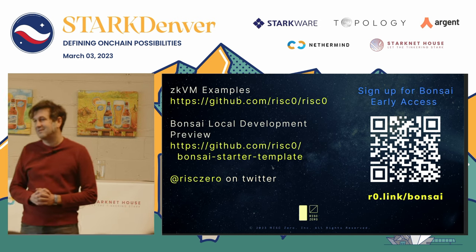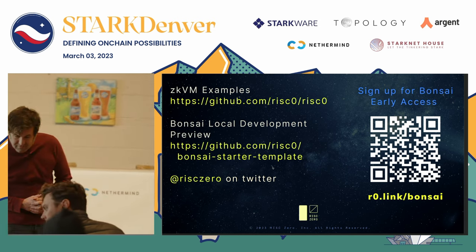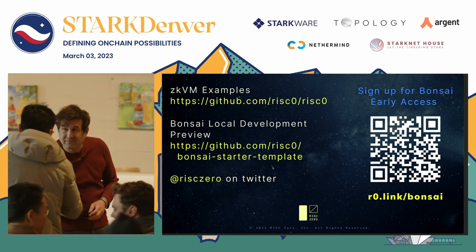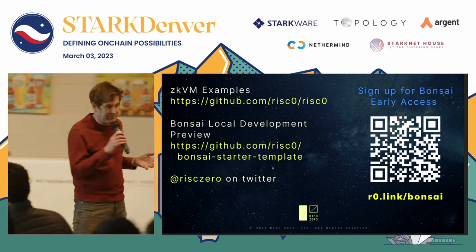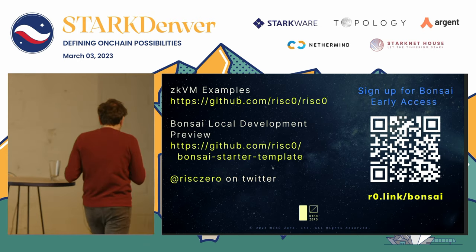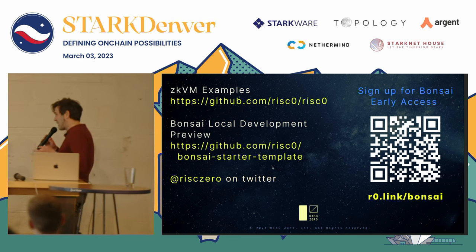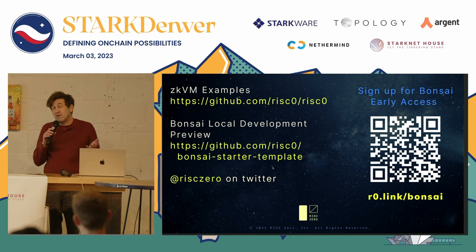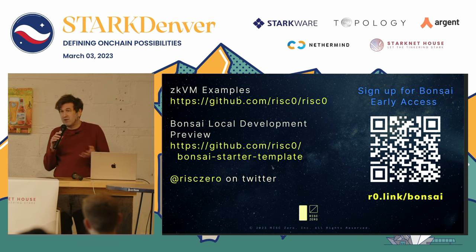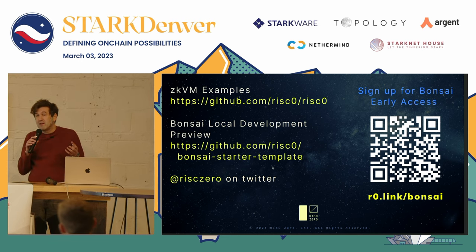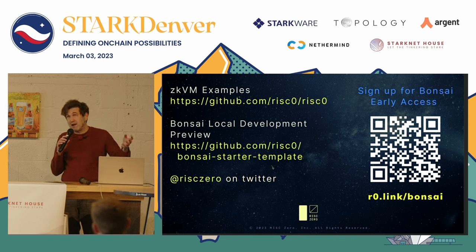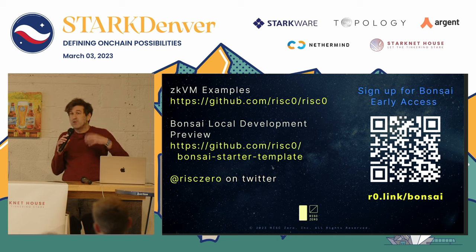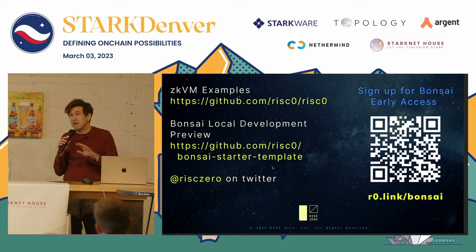Question: do you expect to run general-purpose applications on Bonsai, or only specific ones? The answer is yes — general purpose. Anything that you can write in Rust or C++ code, basically anything you can compile down to an ELF binary for RISC-V, you will submit the binary to the Proving Network along with a request to execute that binary with whatever inputs you want. The Proving Network will then run it and post the result. You'll be allowed to do whatever you want in terms of the kinds of proofs you're making.